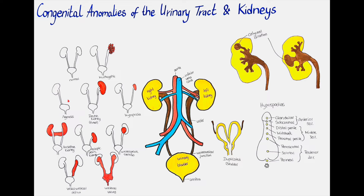Anomalies of the calyces include calyceal diverticula and megacalicosis. In calyceal diverticulum an outpouching of the calyces is seen. This is a rather rare birth defect. In around 50% of patients a stone is also found in these outpouchings, and they predispose the patient for kidney infections. Megacalicosis, another rare congenital anomaly, is when the renal calyces are dilated while the renal pelvis and ureter are usually normal. This dilation can be seen on contrast x-ray; the calyces make up most of the space in the kidney and can impair the normal function of the glomeruli.